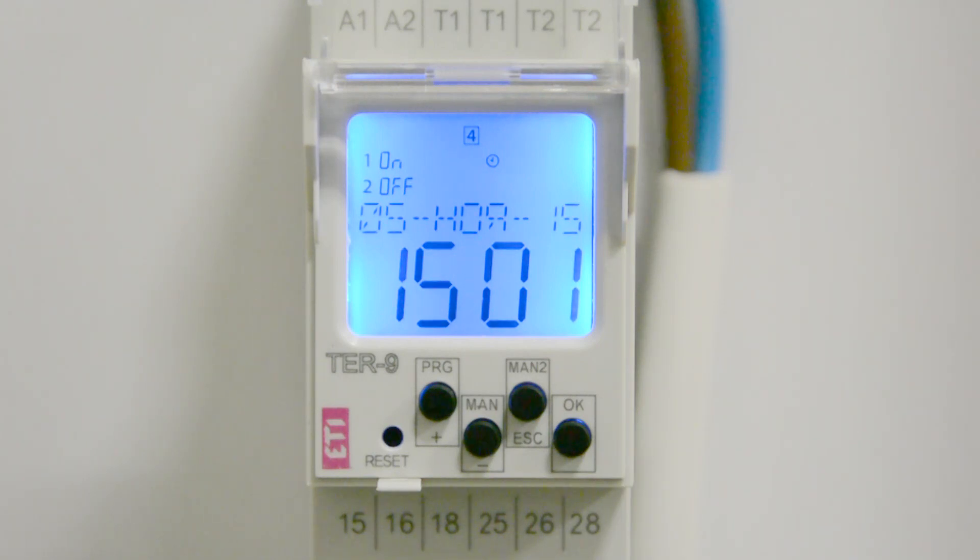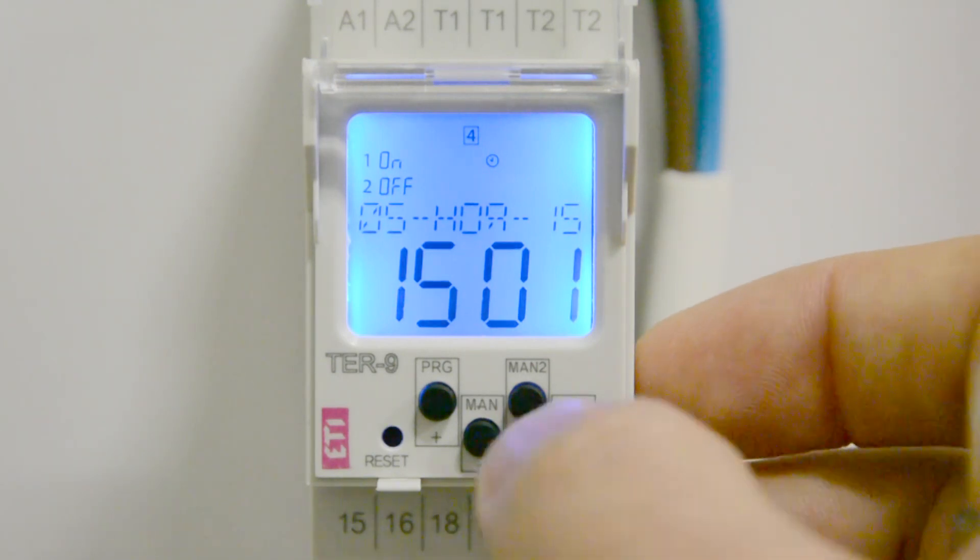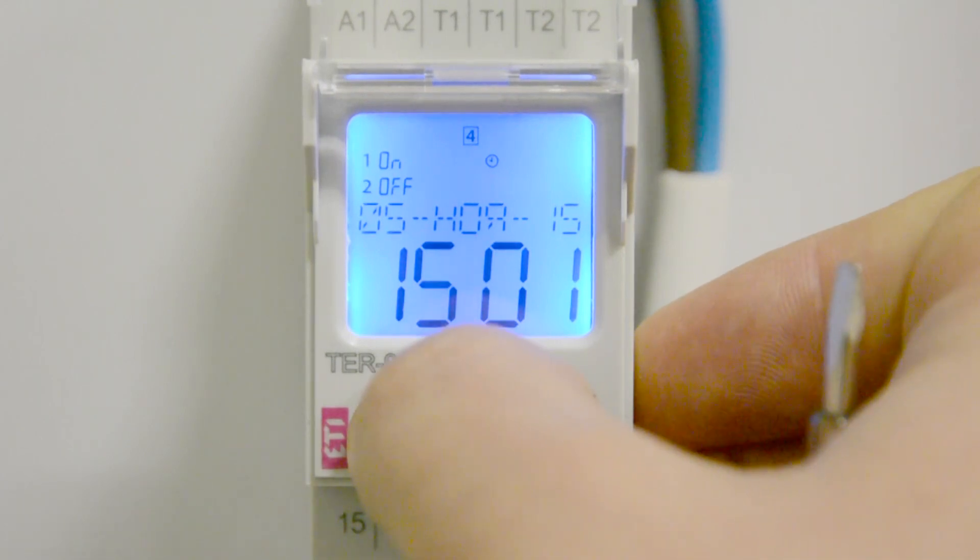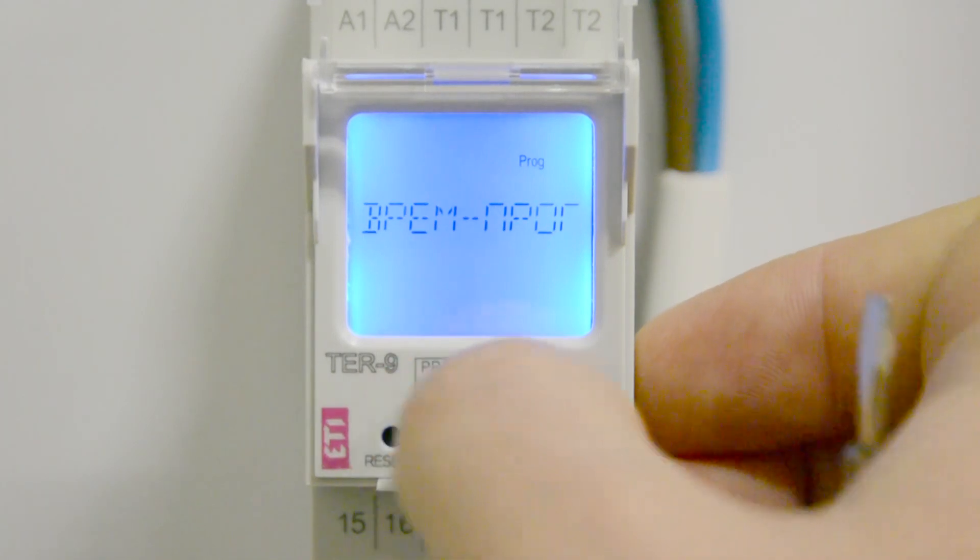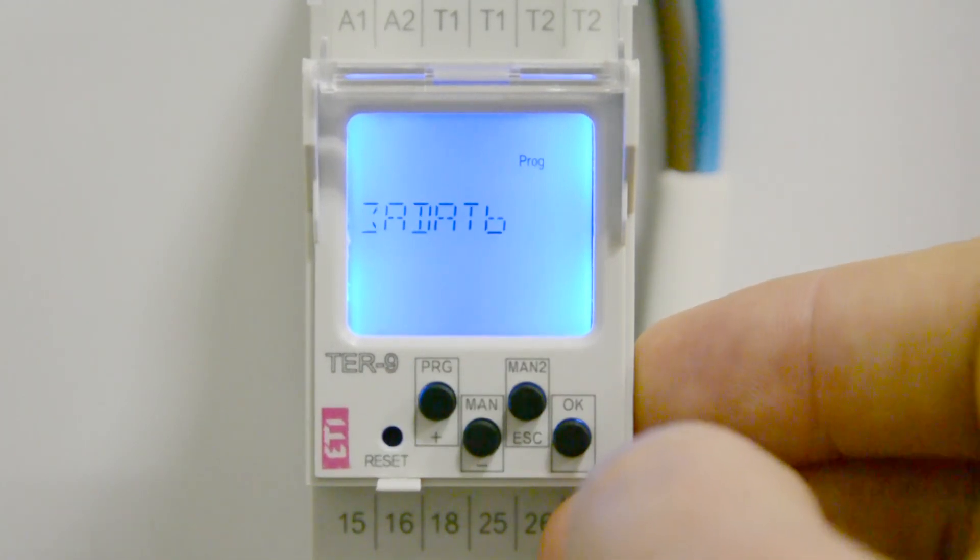To edit or delete a program, go to the time program menu. Again, by pressing the plus and minus buttons, we move between the submenu items.